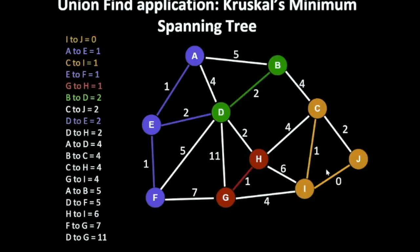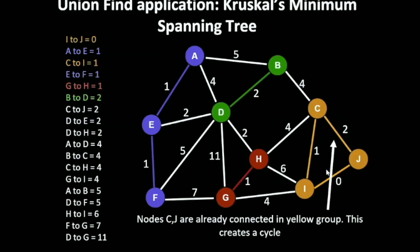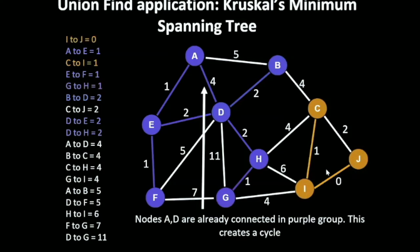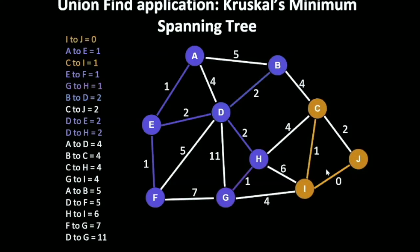If you see that both of the components, if they are already in some set or in some group, you don't need that edge. Then I'm going to D and E. So now D and E both belong to two different groups. See what happens in this case. The group converts its color to blue. So green has become blue now. Then D and H, it will get connected to it. Now it has become blue. Now A and D, it forms a loop. So we are going to skip it. Node A and D already connected in a purple group. This creates a cycle. So we skip it.